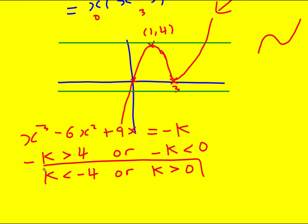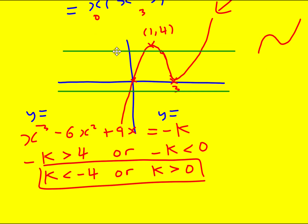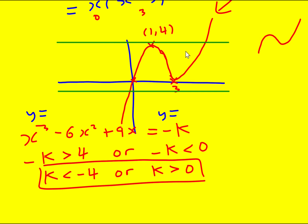That's quite tricky. To summarize: I sketched the cubic by itself, then rearranged the equation into x cubed minus 6x squared plus 9x equals minus k, and drew the horizontal line y equals minus k. I looked at where that horizontal line gives only one intersection — above the local maximum at y equals 4, or below the x-axis at y equals 0 — and then solved those inequalities to get k less than minus 4 or k greater than 0.